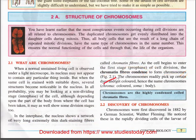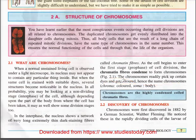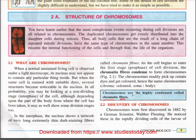Chromosomes get colored — hence the name. 'Chroma' means colored, 'soma' means body. So chromosomes are highly condensed, coiled chromatin fibers. That's an important point.